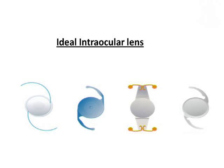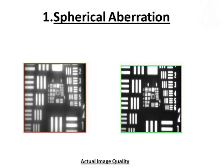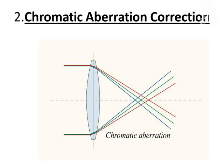What is an ideal intraocular lens? Peak visual performance occurs around 19 to 25 years of age. At this age, there is no spherical aberration. However, spherical aberration increases with age, and the ideal IOL should correct all spherical aberration. Similarly, chromatic aberration should also be corrected by an ideal IOL.